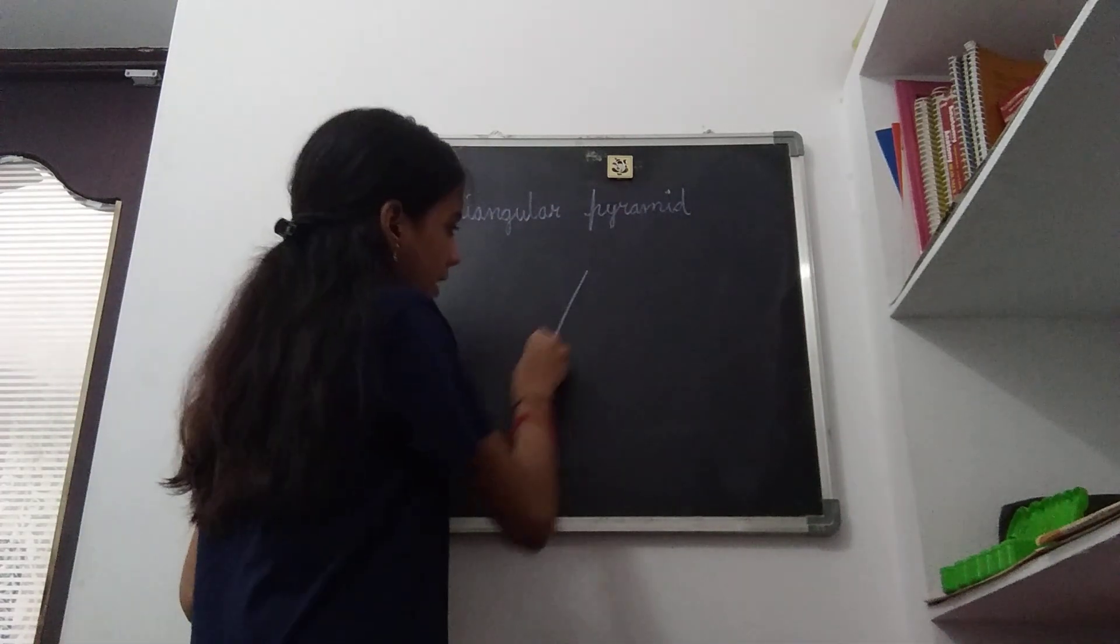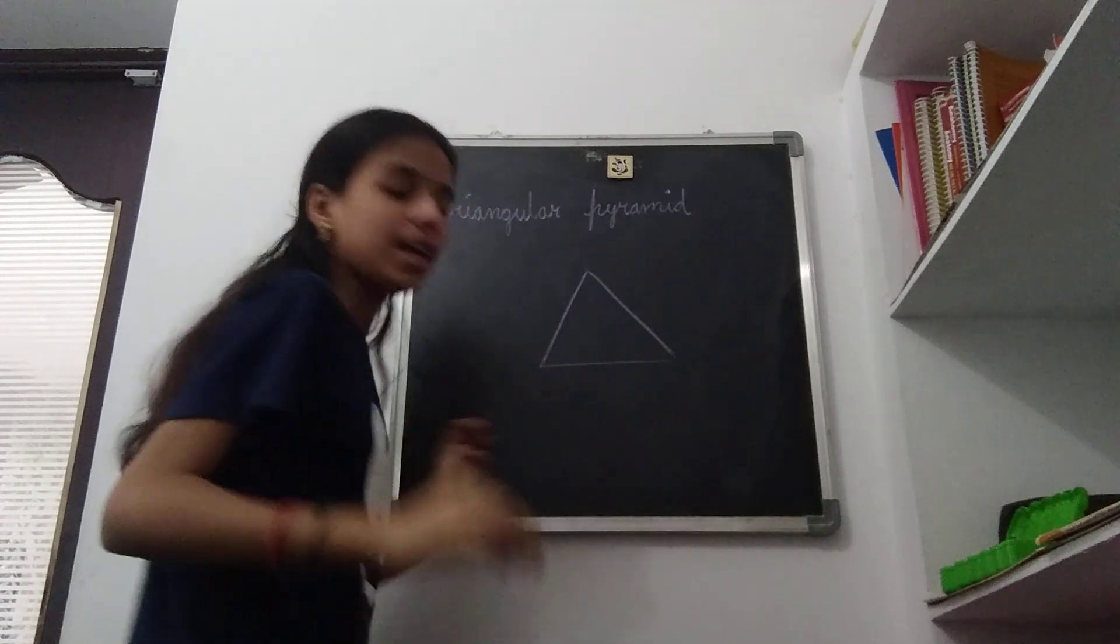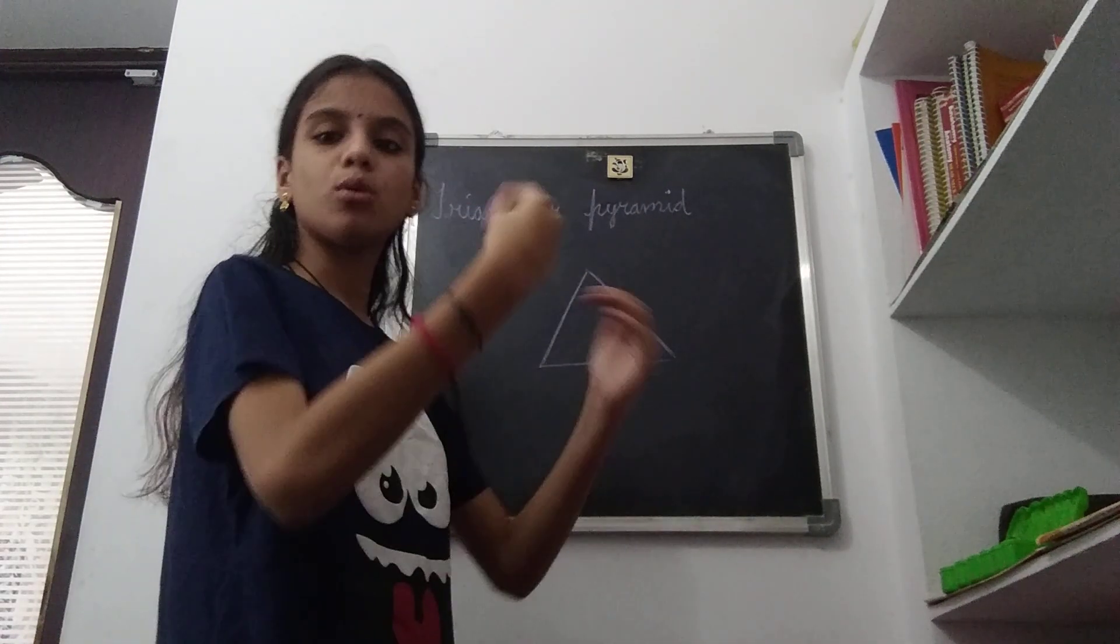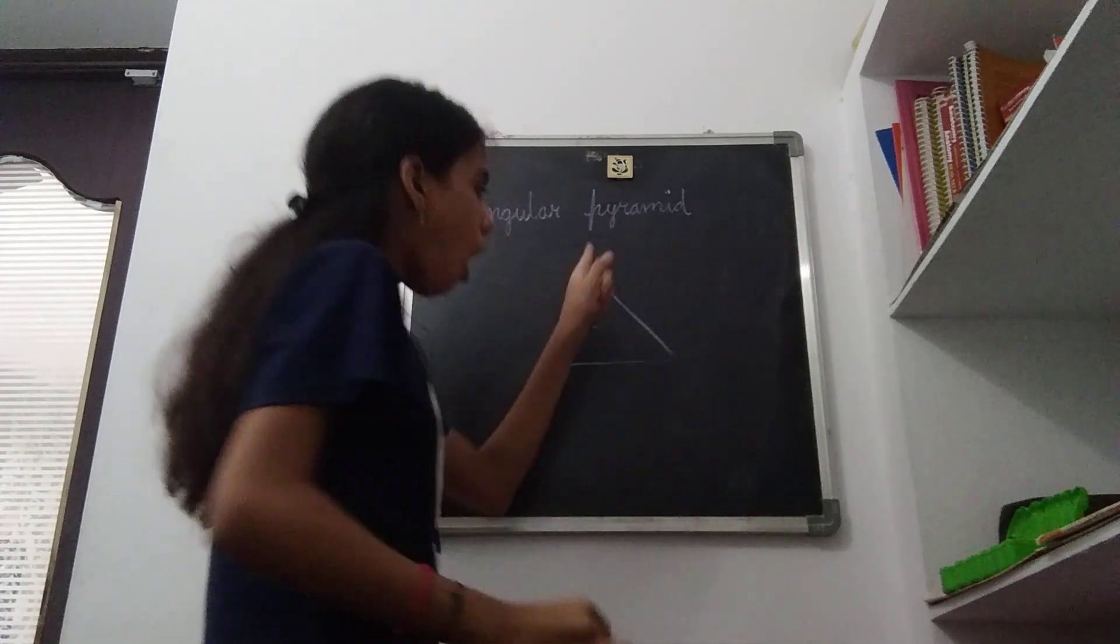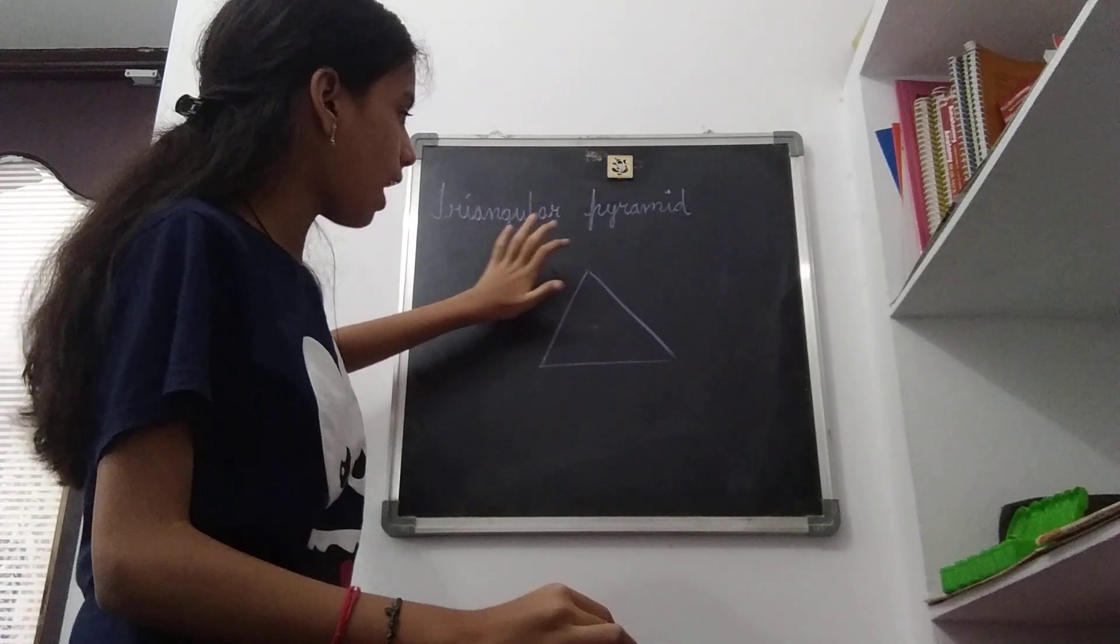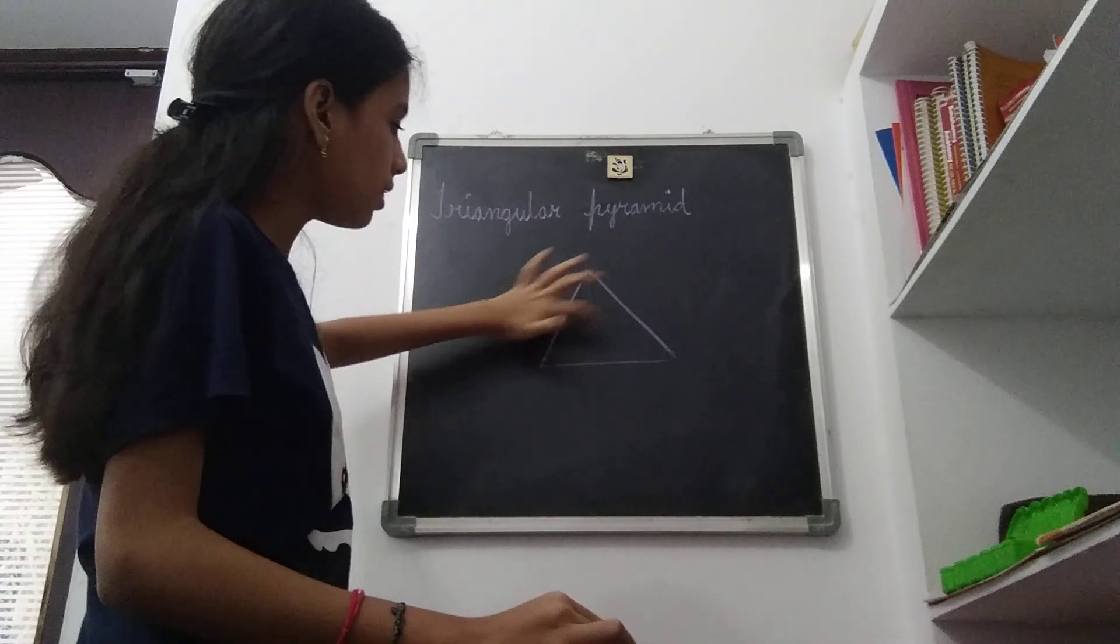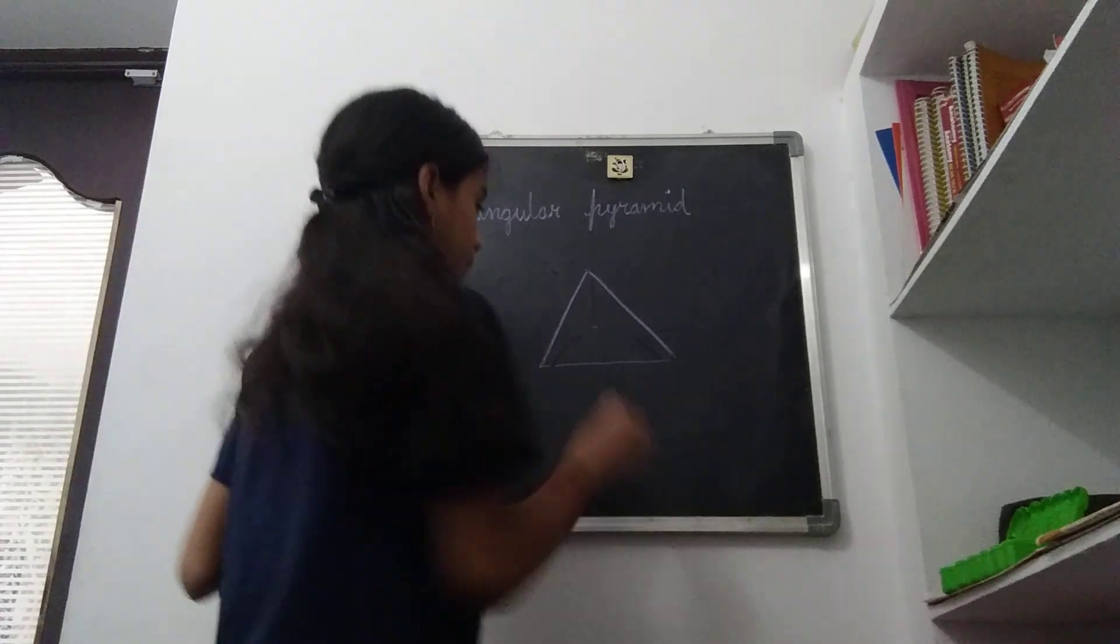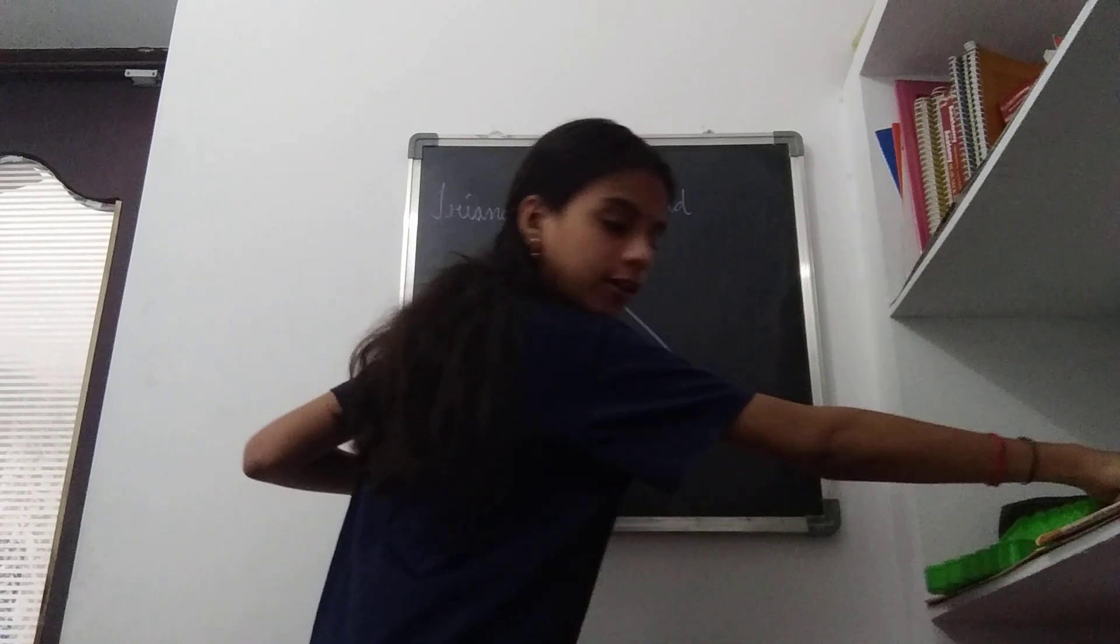Draw a triangle and keep a point inside or outside of the figure. In this triangle we have three sides, so this point should be joined to all the three sides with straight lines. One, two, three.